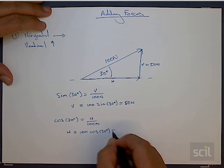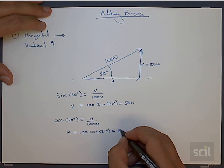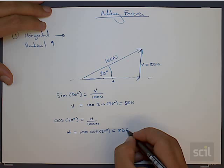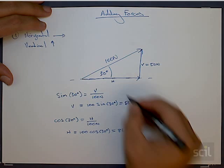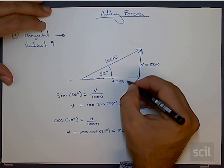Now cos 30 is around about 0.8, which if you use in your calculator, means that that becomes around about 86.6 newtons. So the horizontal component of this force is 86.6 newtons.